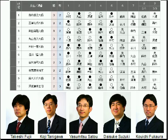And the last 2 are those who came up from B1 class this year. Daisuke Suzuki, a ranging rook player, and Koichi Fukaura, he has Ooi title right now.